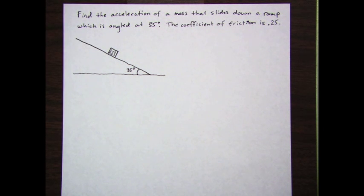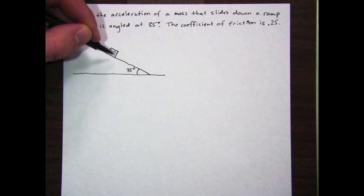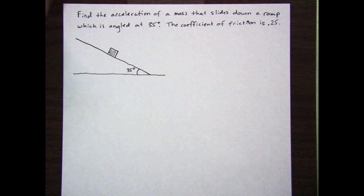On this problem it asks you to find the acceleration of a mass that slides down a ramp which is angled at 35 degrees. The coefficient of friction is 0.25. This box is going to be sliding down the ramp at 35 degrees.